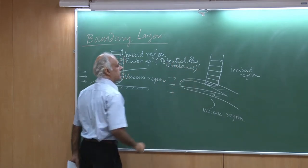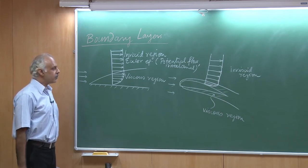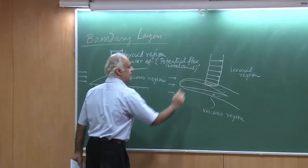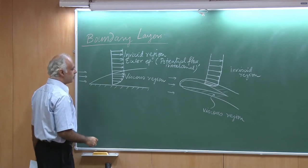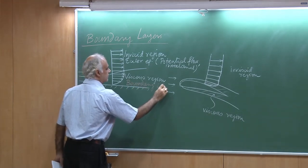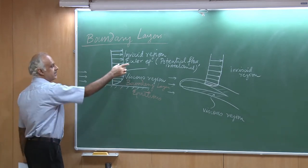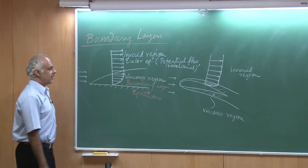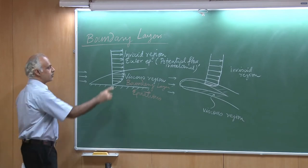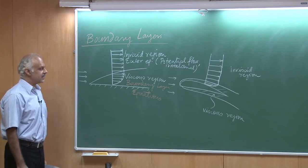Potential flow is easy to solve — only one unknown, and the equation is del-squared phi equals zero. We have already seen flow past a circular cylinder and a spinning cylinder; we could do the same for airfoils. Inside the viscous zone, we derive boundary layer equations. So the recipe is: solve the potential flow or Euler equations for the outer region, solve the boundary layer equations for the inner region, and then match the two solutions.